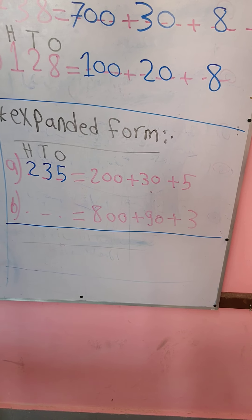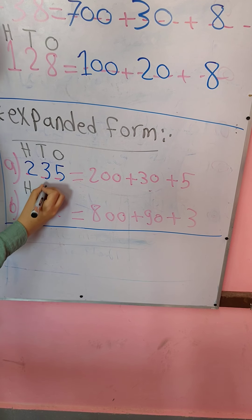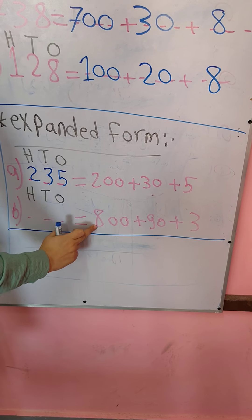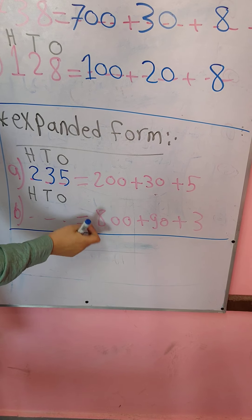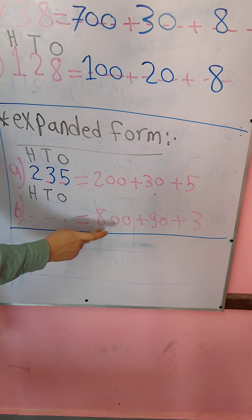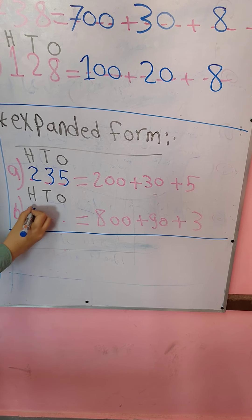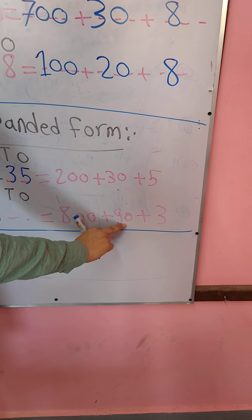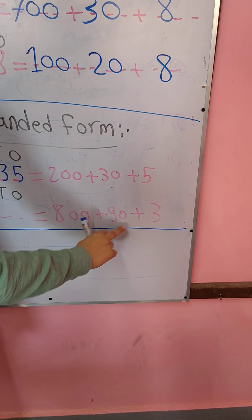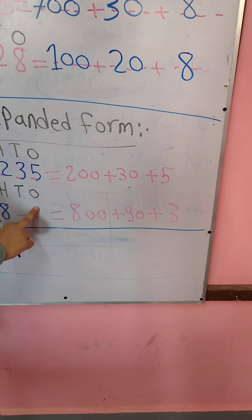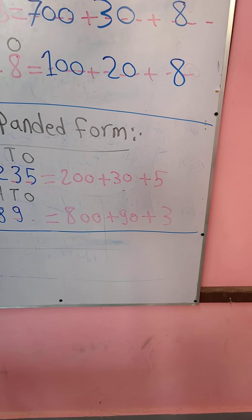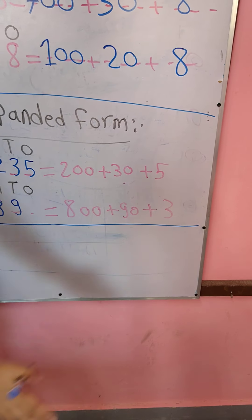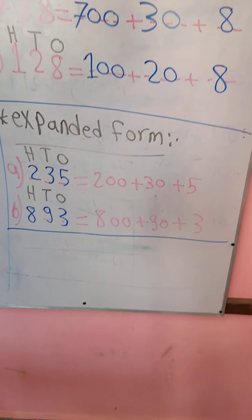For the next example, I'll write H, T, O. We have 800 — 8 with two zeros, so I write number 8 in the hundreds place. Plus 90 — 9 with one zero, so I write number 9 in the tens place. And here I have 3 — 3 without any zero, so I write it in the ones place. The number is 893.